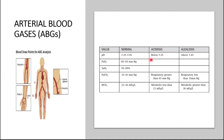If the pH goes above 7.45, the patient is alkalotic. Remember: when the bad guy falls, he falls into acid — that's how you remember the difference between acidosis and alkalosis.